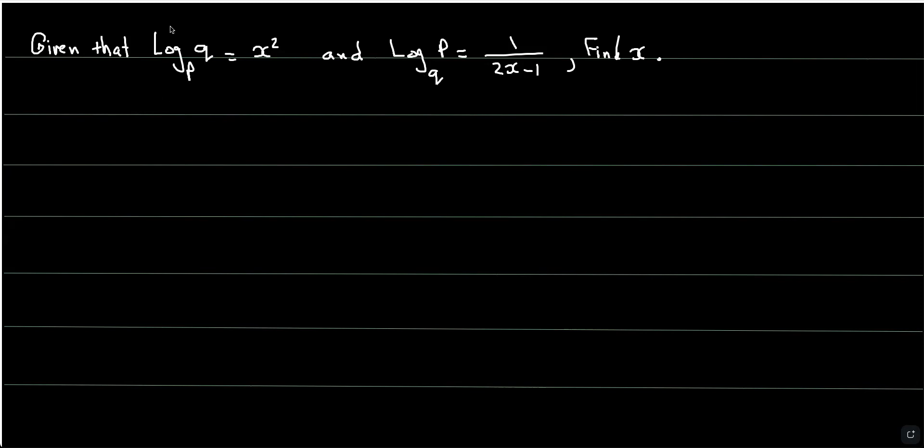I think the best approach here is to change each one into exponential functions. So it's going to be P raised to the power of x squared equals Q. And then this one here, it's going to be Q raised to the power of 1 over 2x minus 1 equals P.